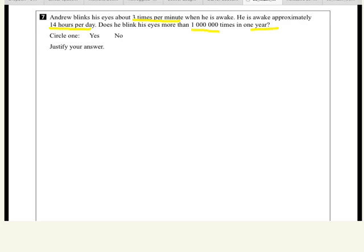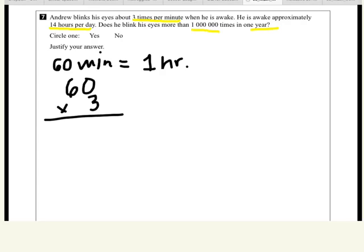So, the first thing you're doing, you said that you know that 60 minutes equals one hour. That's good information to write down. So, why are you multiplying 60 times three? Because there are six times per minute. Good, because he's blinking three times per minute, you're trying to figure out how many times he blinks in one hour. Good, so what's 60 times three? 180.